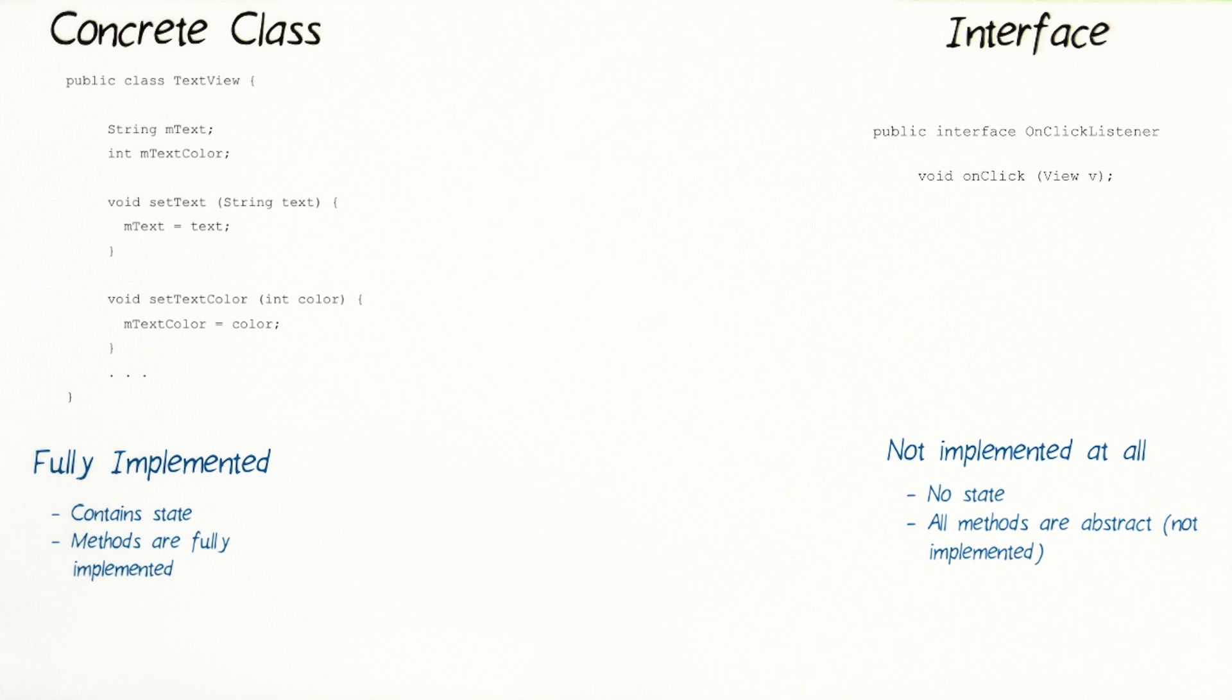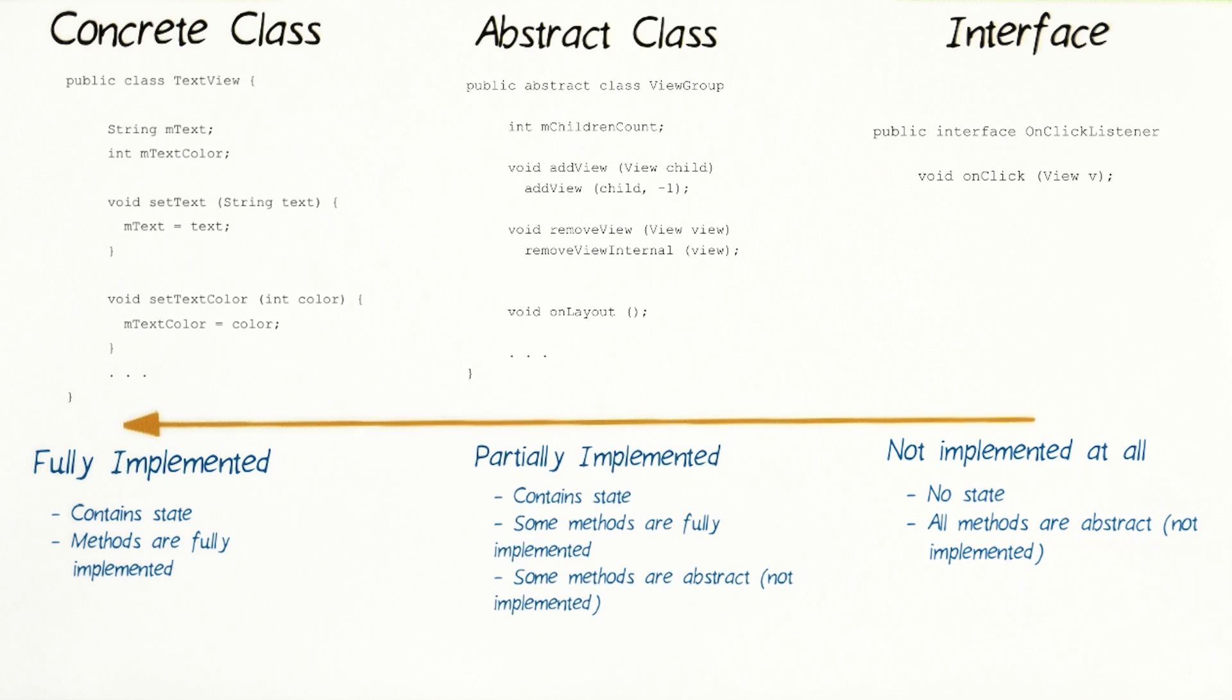There can be multiple abstract methods in an interface. But this example of the onClickListener interface only has one abstract method, the onClick method. In the future, we'll also encounter abstract classes. This is a partially implemented class. And it contains state, and some methods are fully implemented, while other methods are left abstract for someone else to define the behavior.